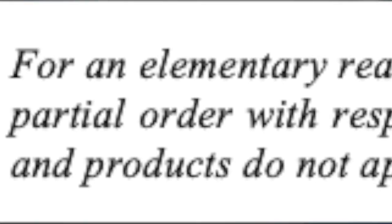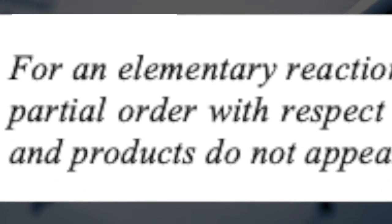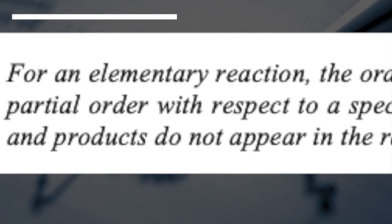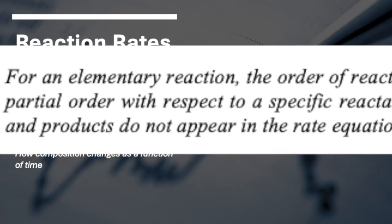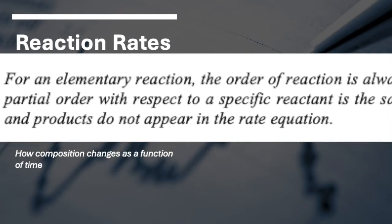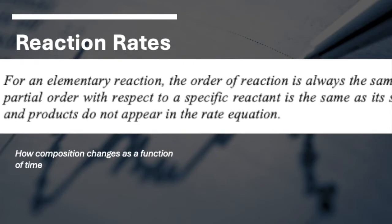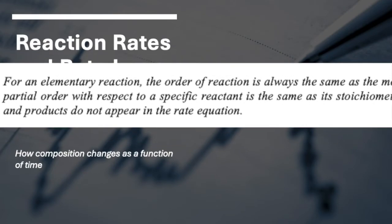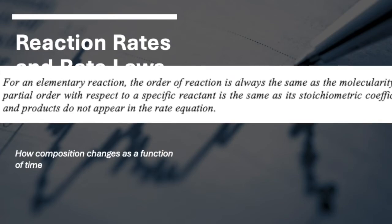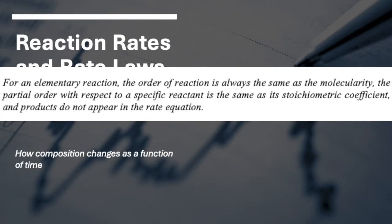For an elementary reaction, the order of reaction is always the same as the molecularity. The partial order with respect to a specific reactant is the same as the stoichiometric coefficient and products do not appear in the rate equation. Most elementary reactions have a molecularity of 1 or 2. First order and second order rate equations are the most commonly encountered for elementary reactions.